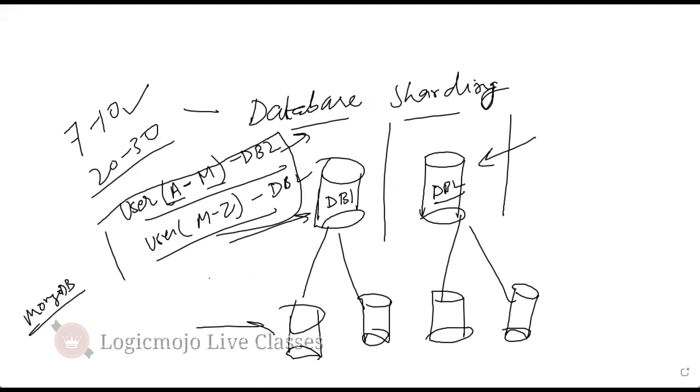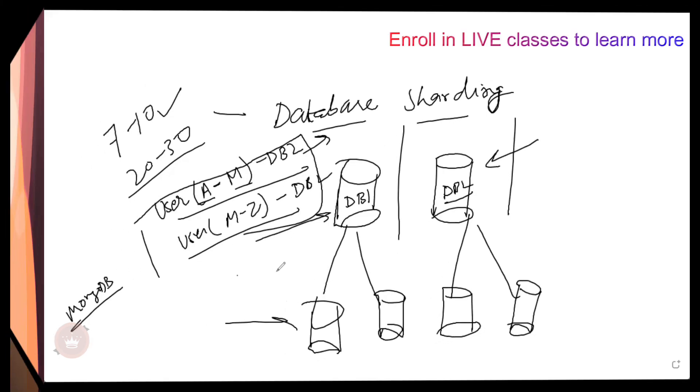So here in the slave also will be specific to the master. I am sorry, can you explain it more? So for example, you mentioned that an A to M master will be there, right?